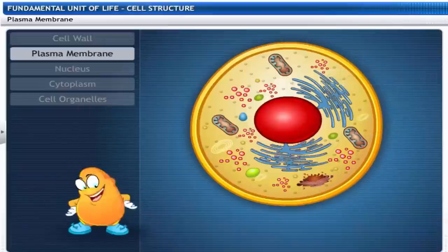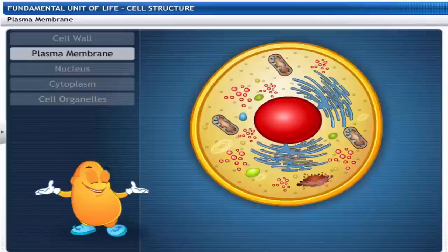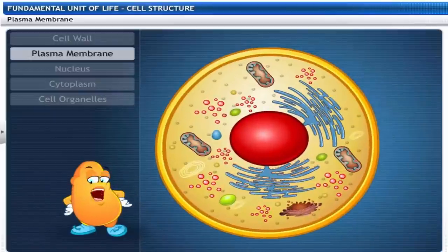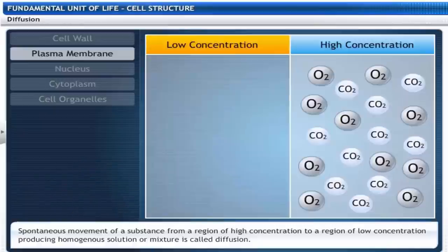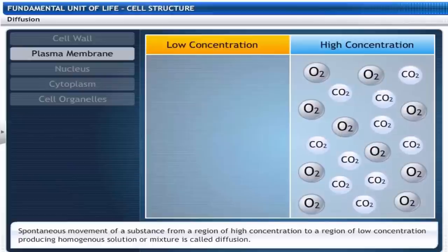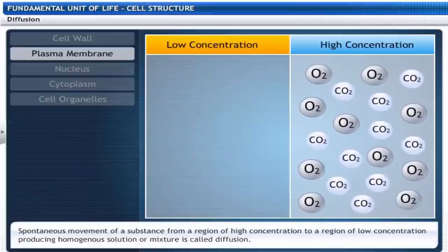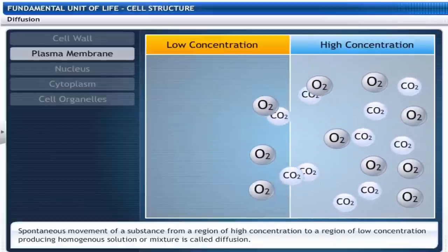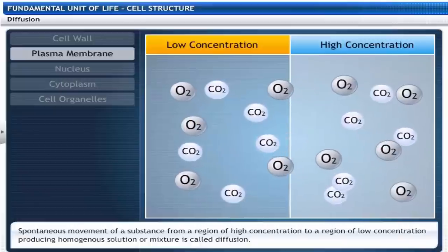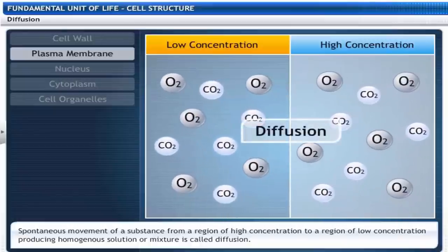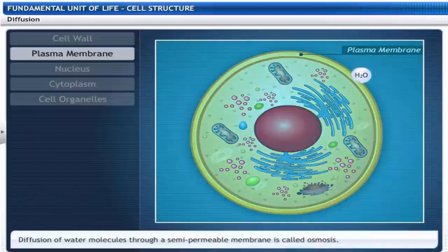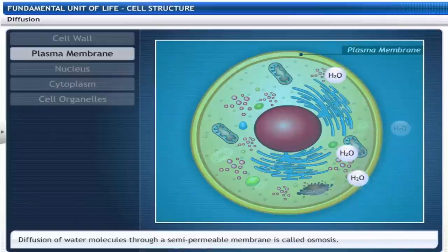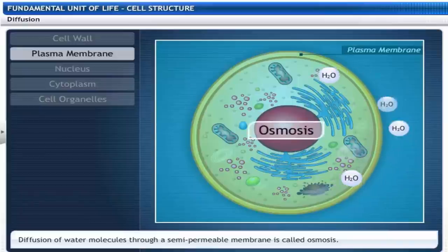That's my selectively permeable plasma membrane. I'll show you the different ways in which substances move through it. There is spontaneous movement of gases like carbon dioxide and oxygen from a region of high concentration to a region of low concentration to form homogeneous solutions through diffusion. The diffusion of solvent molecules through a semi-permeable membrane from a region of low concentration to high concentration is called osmosis.